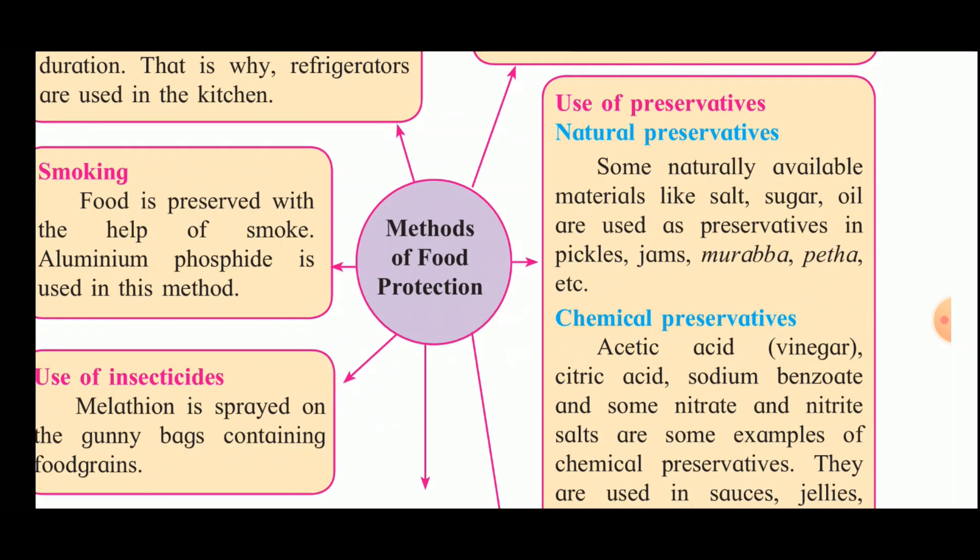Next is the use of preservatives. Natural preservatives include naturally available materials like salt, sugar, and oil, which are used in pickles, jams, murabbas, petha, etc. The right amount of salt and oil is added to pickles to preserve them for a long period — sometimes 2 to 3 years. Sugar is added when preparing murabbas, so salt, sugar, and oil can all serve as natural preservatives.